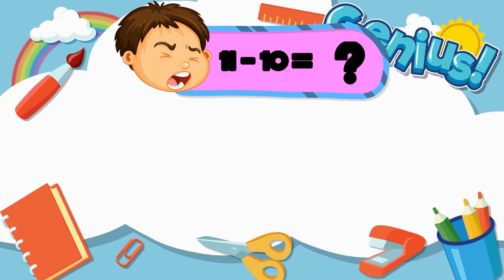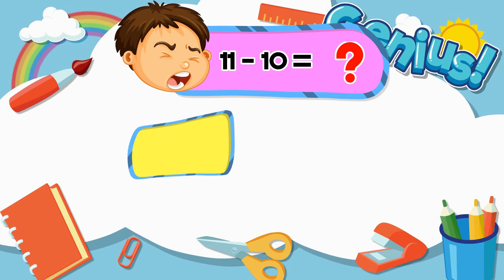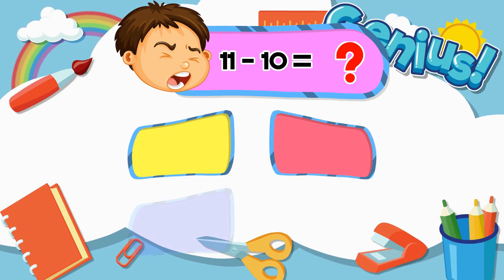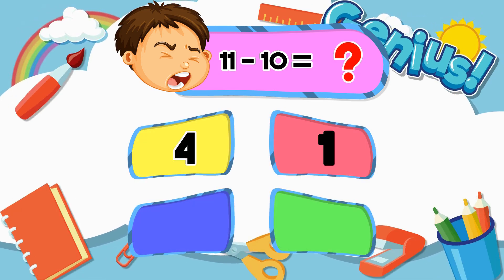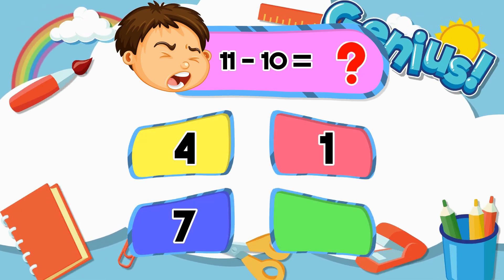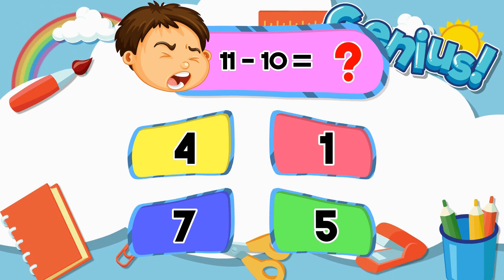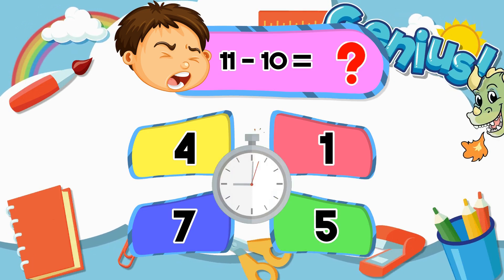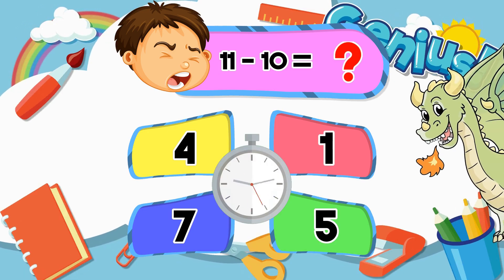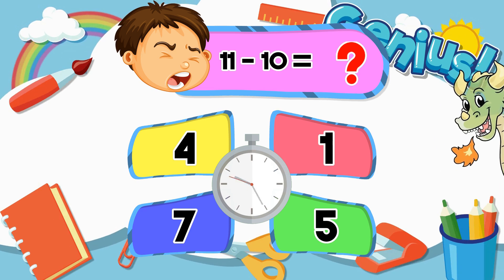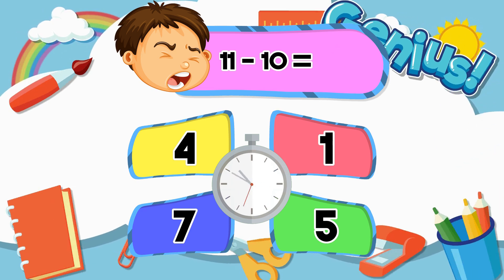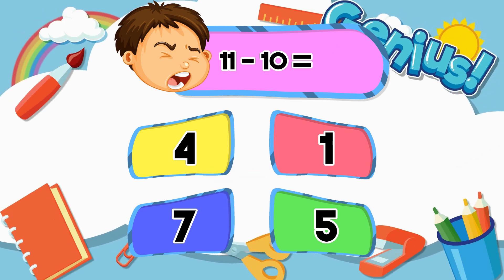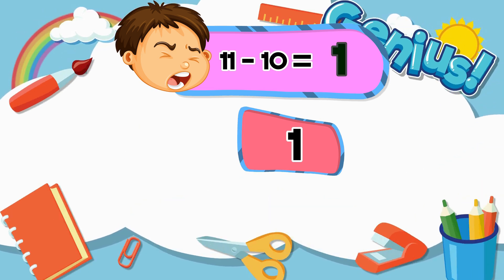What is 11 minus 10? Options: 4, 1, 7, 5. Answer: 1.